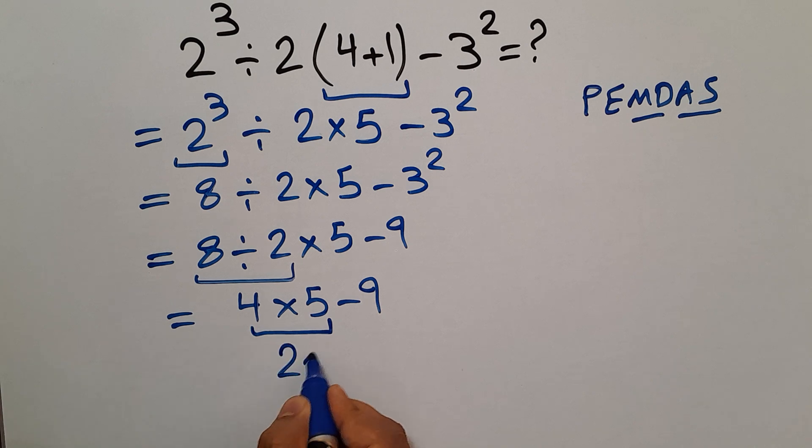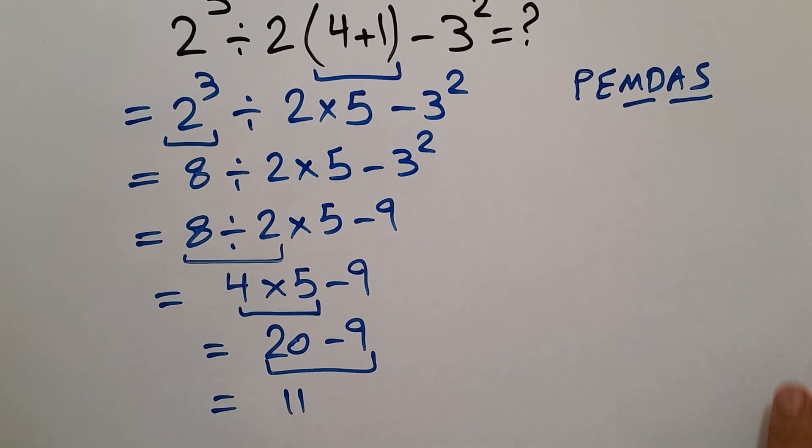So 20 - 9, and this is equal to 11. Our final answer to this problem is 11.